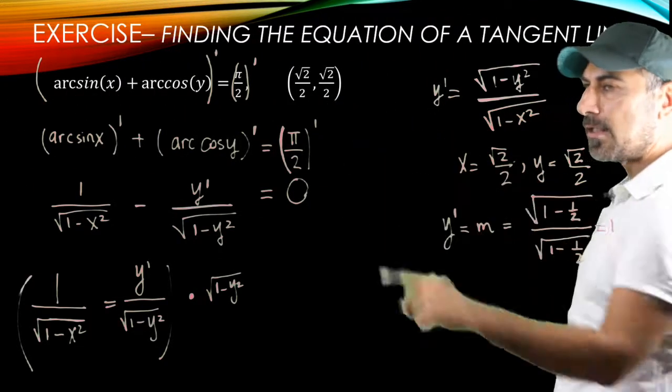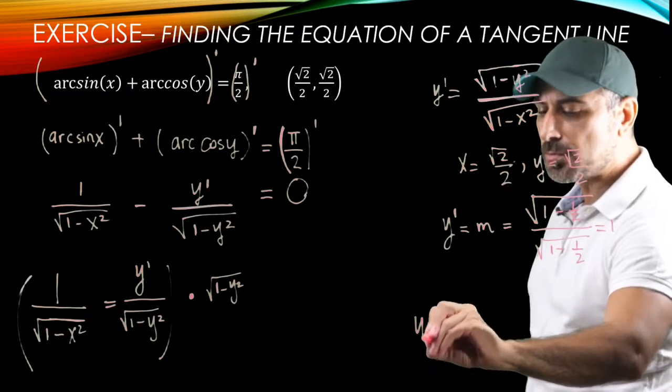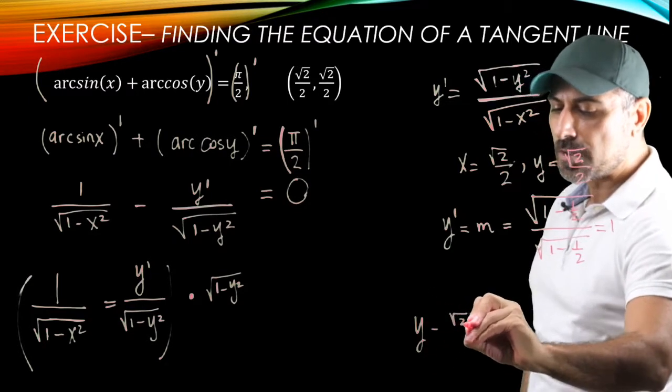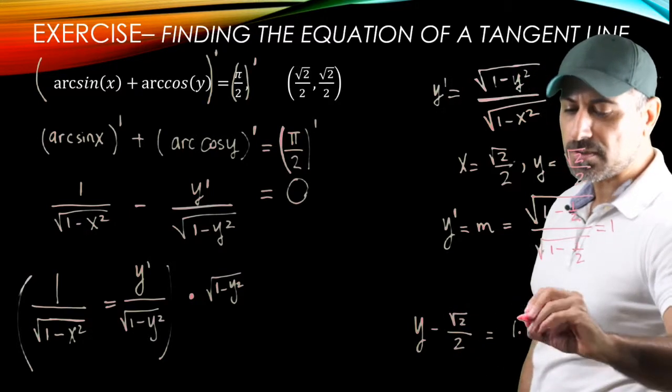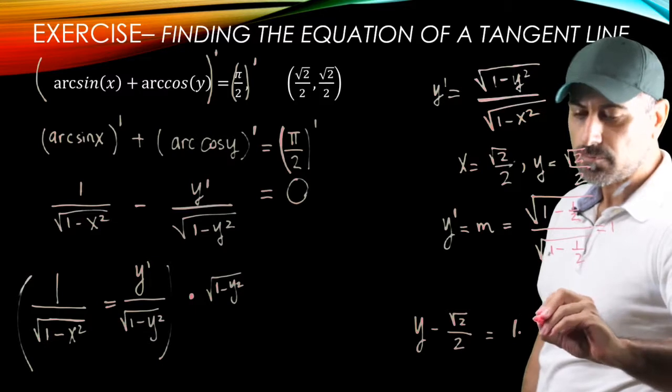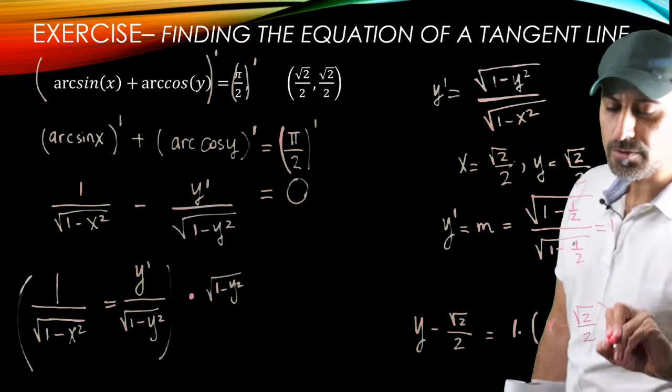So we have the slope to be equal to 1 and we have the point that the line passes through. So we can write the equation of the tangent line to be y minus radical 2 over 2 equals 1 times x minus radical 2 over 2.